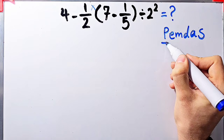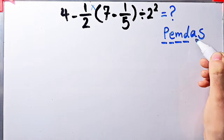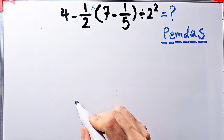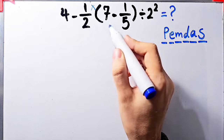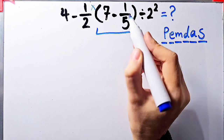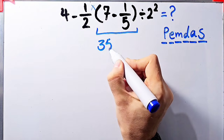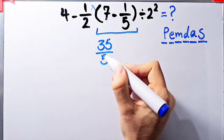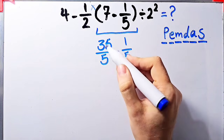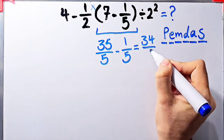In this rule, P stands for parentheses, E stands for exponents, M stands for multiplication, D stands for division, A stands for addition, and S stands for subtraction. According to the PEMDAS rule, first we simplify the parentheses. We have 7 minus 1 over 5. Since the denominator of this fraction is 5, we can write 7 as 35 over 5. Now we have 35 over 5 minus 1 over 5, which equals 34 over 5.